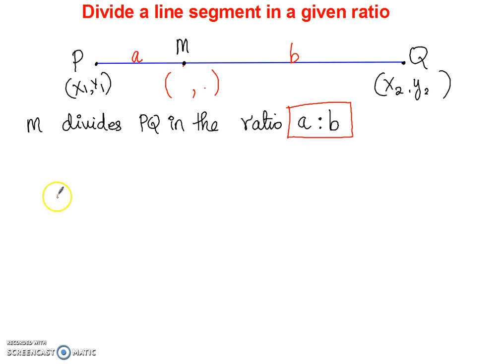So the formula is very simple. The coordinates of M, M will have an X and a Y. This is a comma right in the middle. So this is going to be your X coordinate and this side is going to be your Y coordinate. So to get the X, this is how you do it.